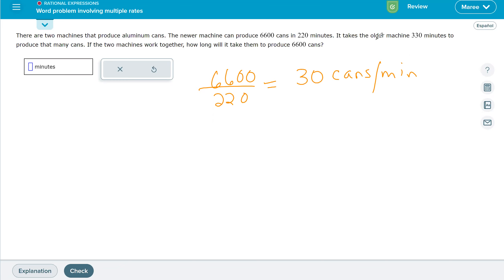It takes an older machine 330 minutes to produce that many cans. So we want 6,600 divided by 330, and that will be 20 cans per minute.